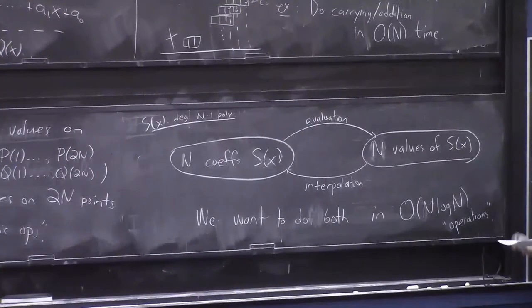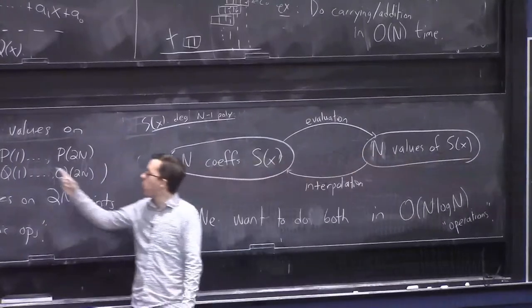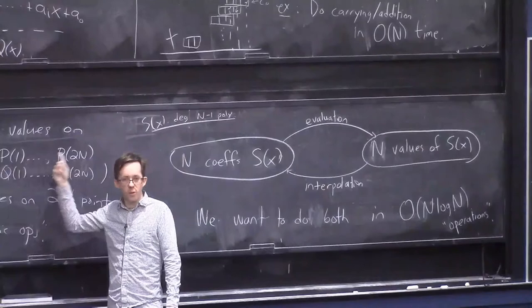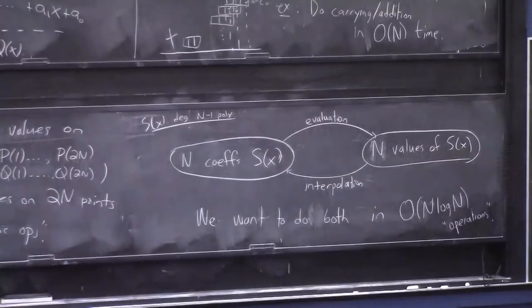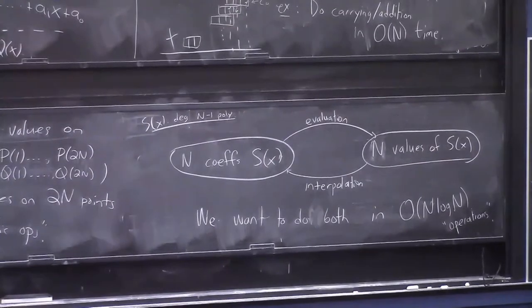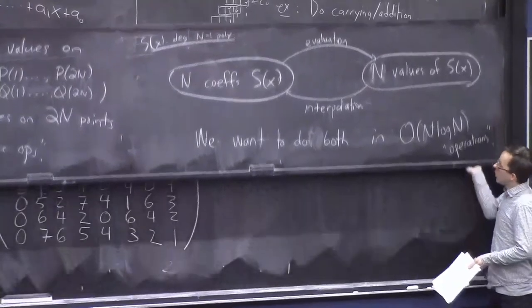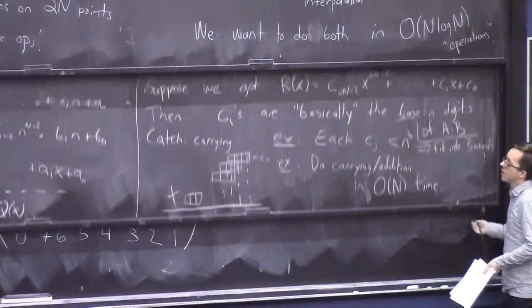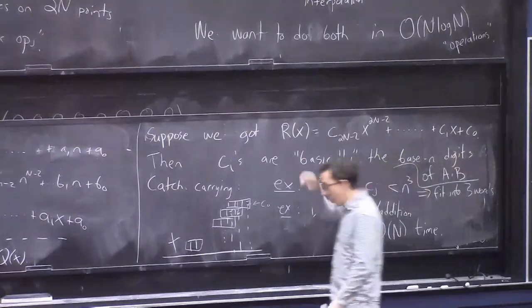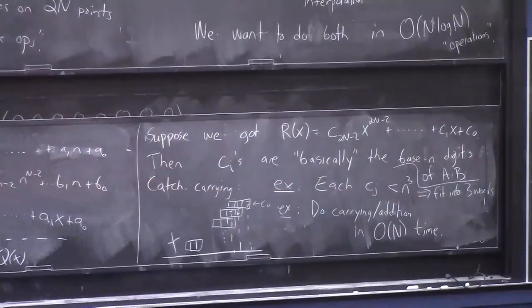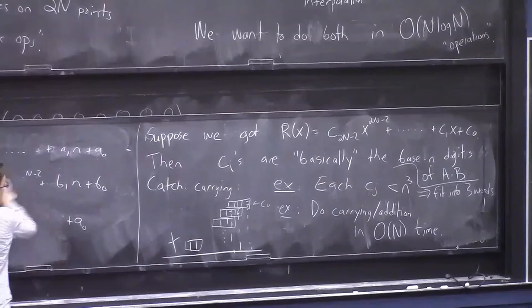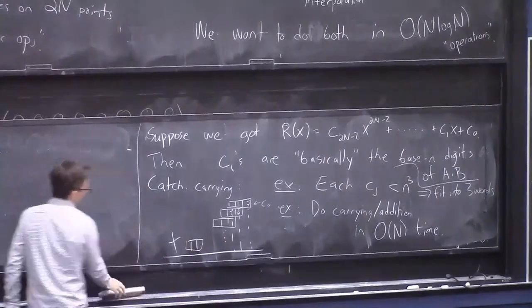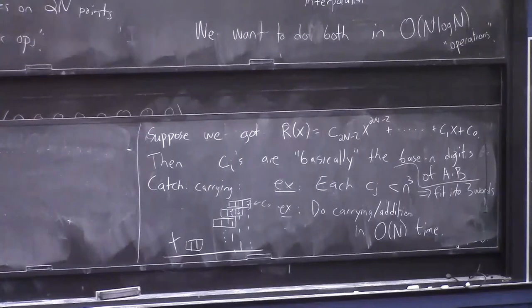But you can if you choose the cleverest choice of points to do it on. Don't choose 1, 2, 3, 4, 5 up to 2 n. That's not the cleverest choice. See, we have a freedom. We can choose whatever points we want in this argument, so we'll choose the cleverest ones. And we're going to choose some numbers to evaluate these polynomials on, such that in some sense, there will be a lot of cost sharing when you're evaluating a polynomial p on all these n points. So, this cost sharing will somehow allow you to do it much faster than n squared operations. It will allow you to do it in n log n operations.